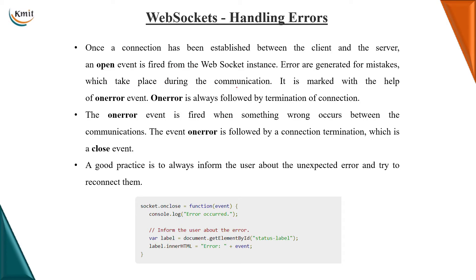For handling errors in WebSockets, we make use of the onerror event. An error is a mistake generated during the communication process, and we handle those errors using the onerror handler.